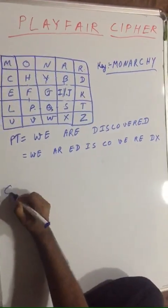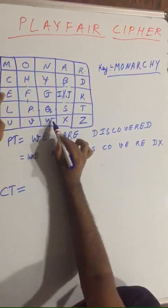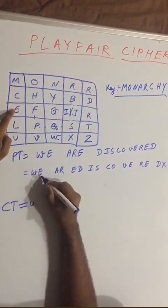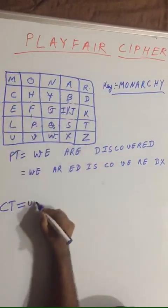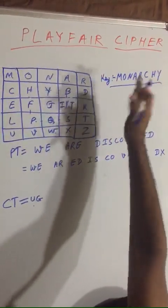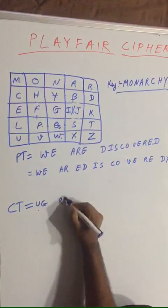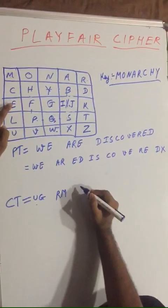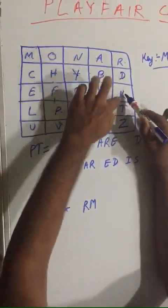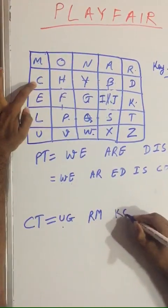Now let us find the ciphertext for each pair. For WE: W is here, E is here — they form a rectangle, so the correspondence gives U for W and G for E, so WE → UG. For AR: A and R are in the same row, so shift one step — A gives R and R wraps to M, so AR → RM. For ED: E and D form a rectangle, so E gives K and D gives C, so ED → KC.